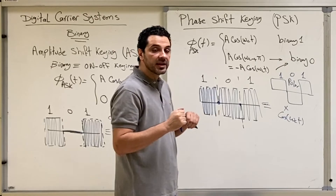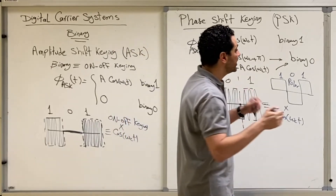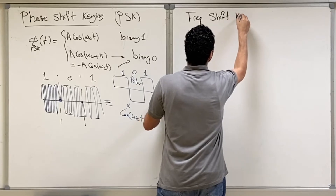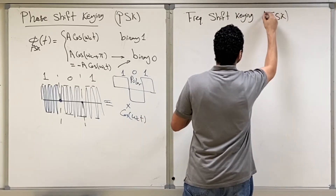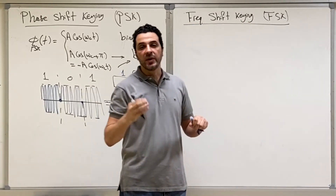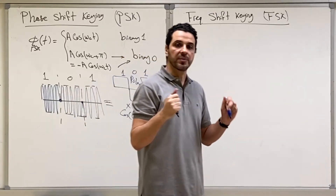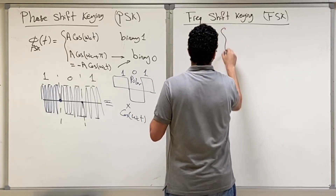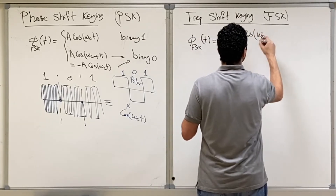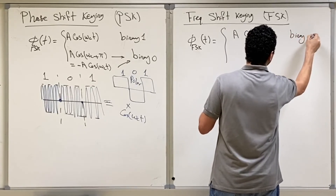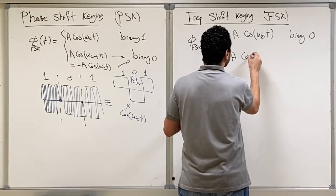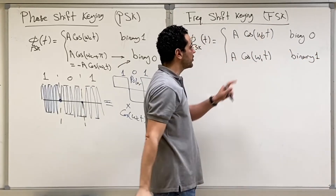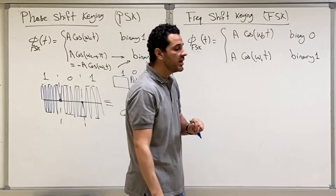Now let's move to the next type of modulation, Frequency Shift Keying, abbreviated FSK. In FSK, since we are talking about the binary case, we need one frequency to represent binary one and another frequency to represent binary zero. The FSK signal is either A·cos(ω0·t) for binary zero, or A·cos(ω1·t) for binary one. So we have two carrier frequencies: ω0 represents binary zero and ω1 represents binary one.